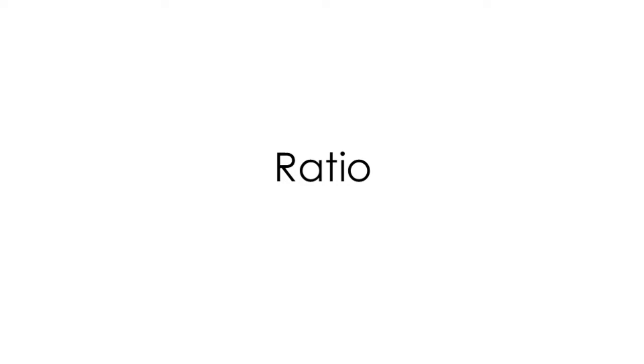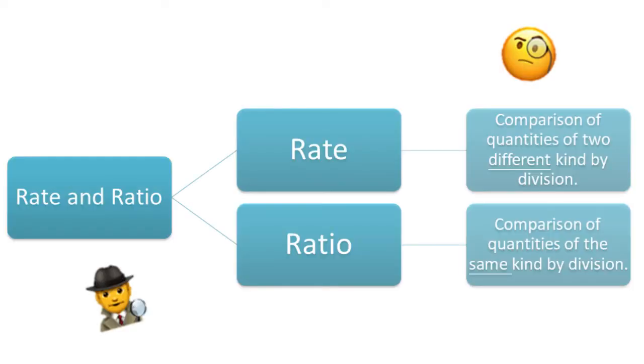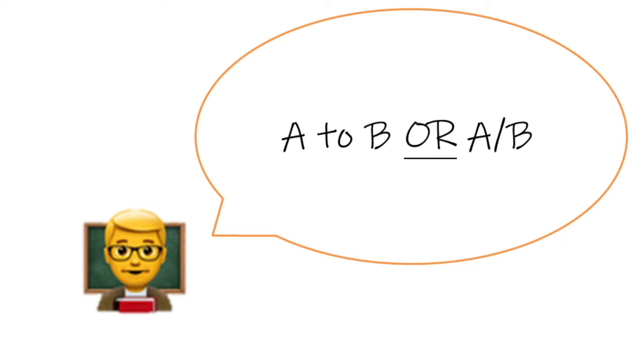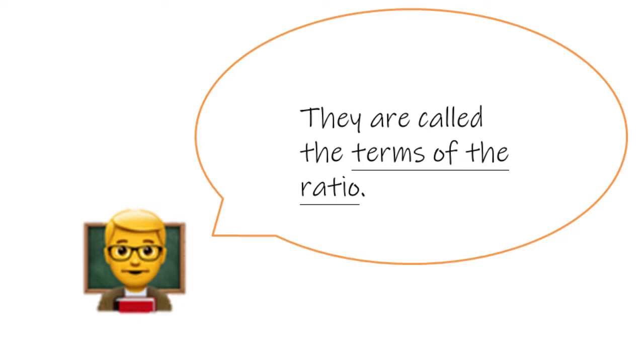Now we are going to talk about ratio. While rate discussed in the last section is defined as a comparison of quantities of two different kinds by division, ratio is a comparison of quantities of the same kind by division. The ratio of a quantity A to another quantity B is written as A to B or A over B, where A and B are both non-zero quantities, and they are called the terms of the ratio.